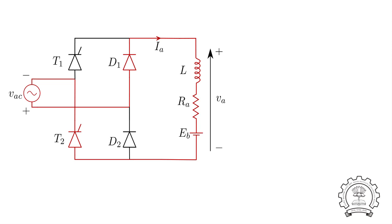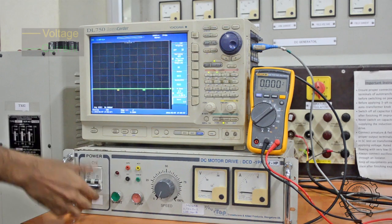So in order to change the average voltage, we have to change the thyristor firing angle. Let's see how it actually works.